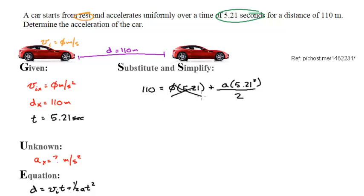Since I'm multiplying by 0, this goes away, so I get 110 equals a times 5.21 squared all over 2.